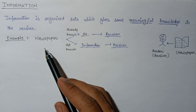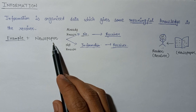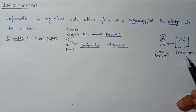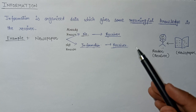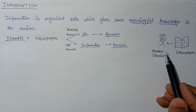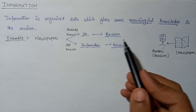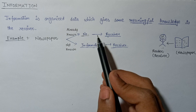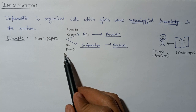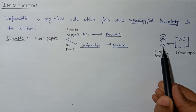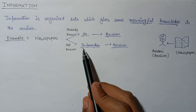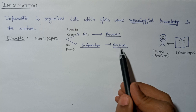Let's understand the concept of information with the example of a newspaper. A reader reads the newspaper every morning to gather news. In case one, if the news read by this reader is already known to the reader, then that data or news will not act as information. In case two, if the news is completely new to this reader, then that news will act as a part of information to that reader.